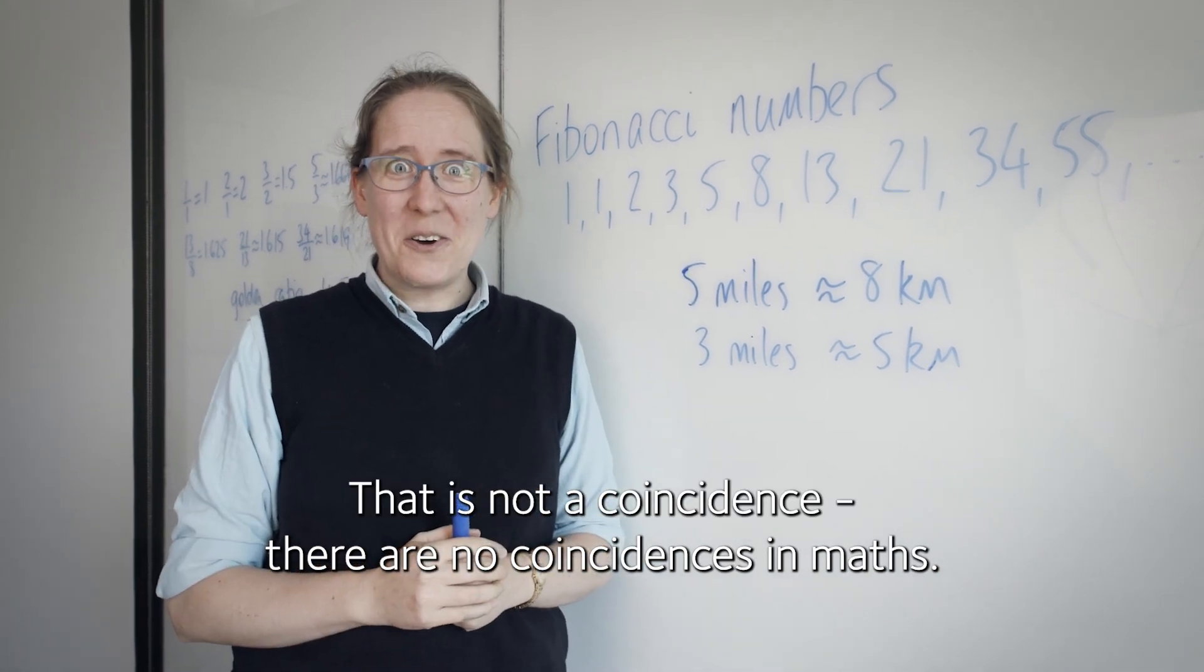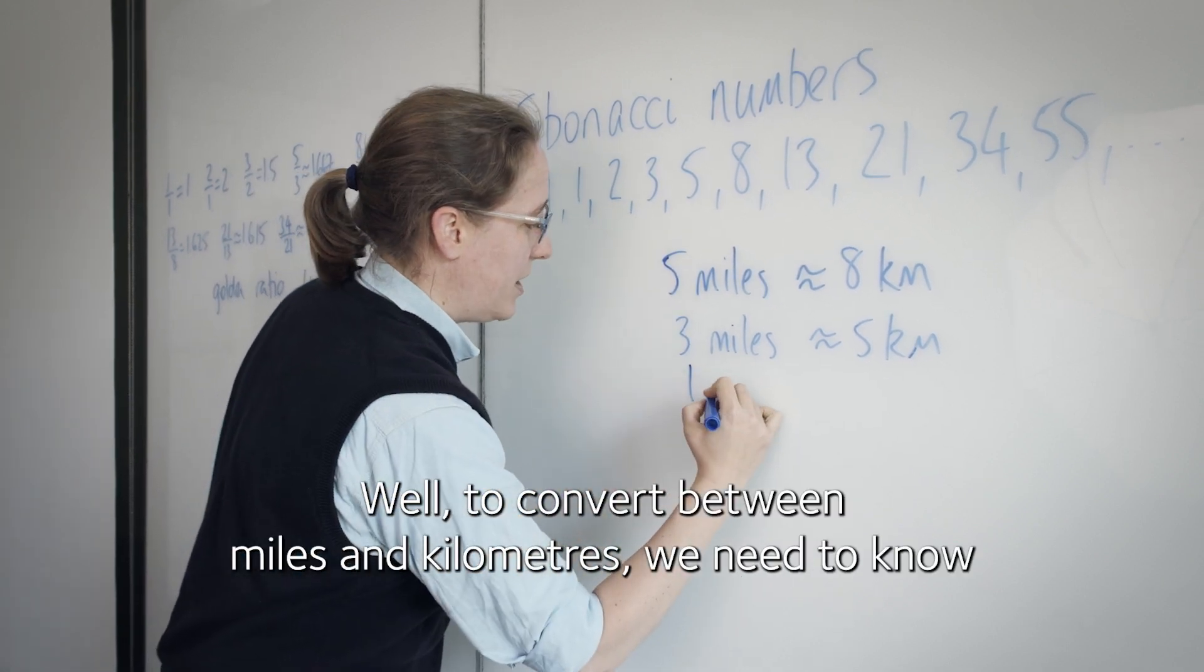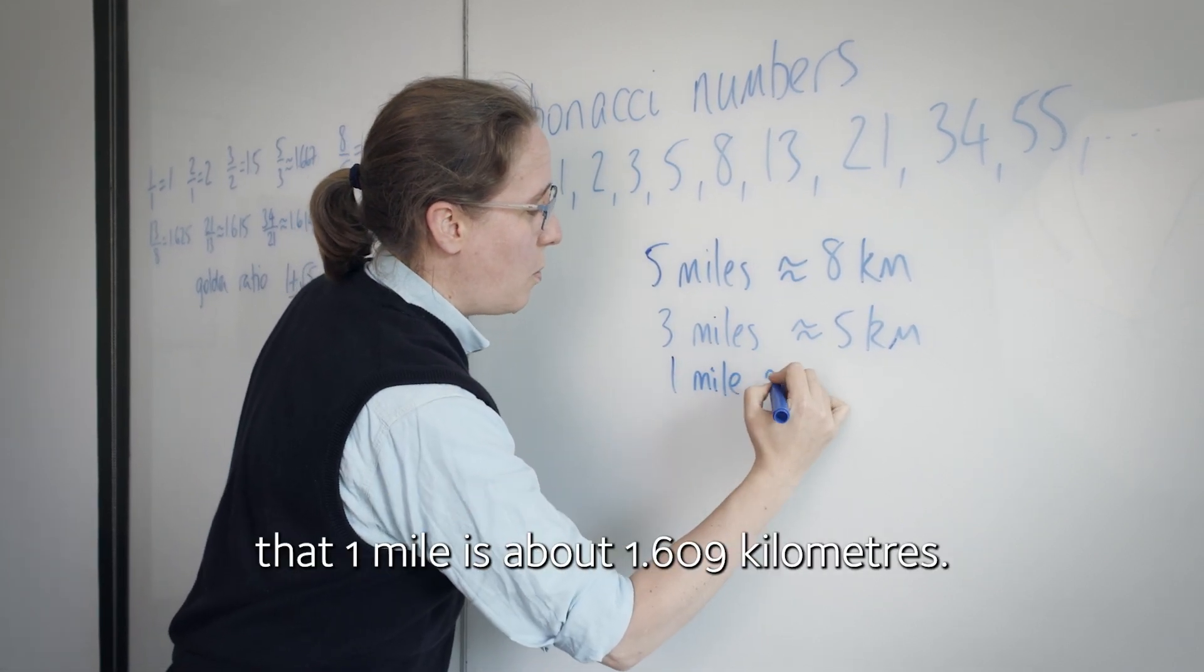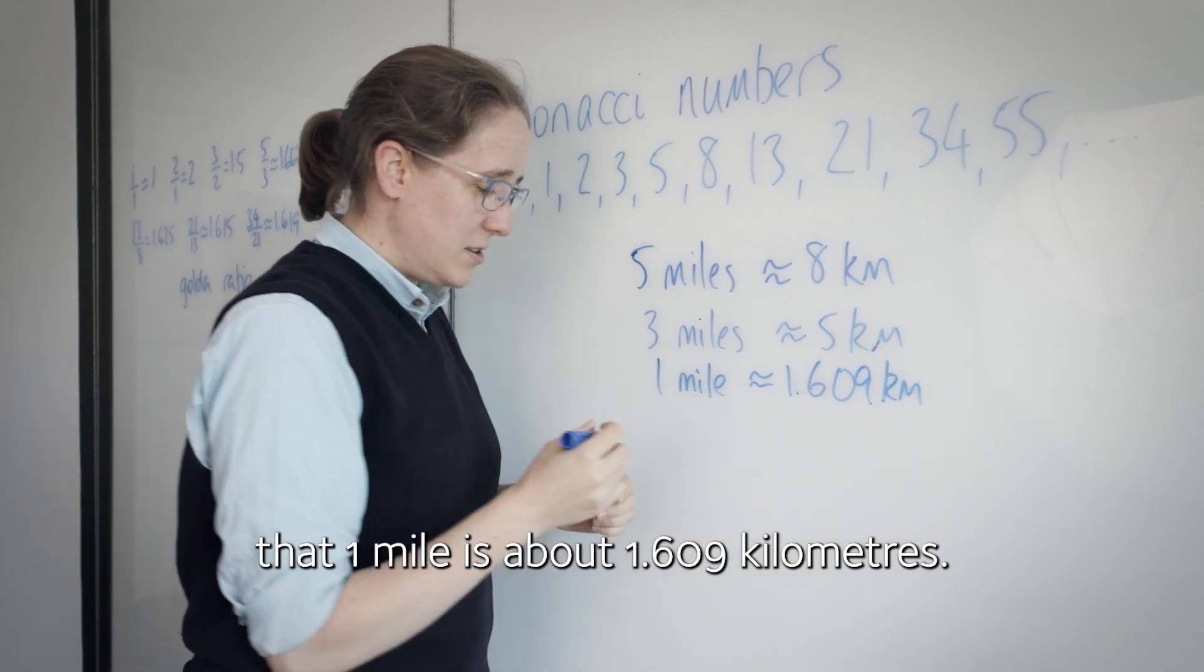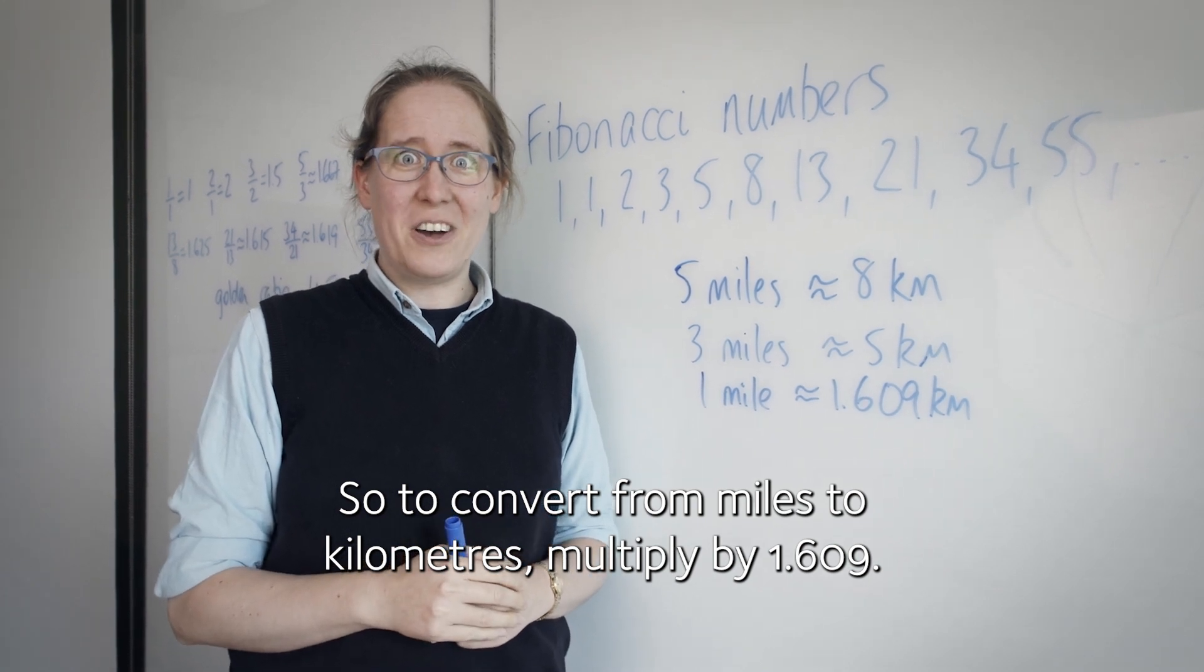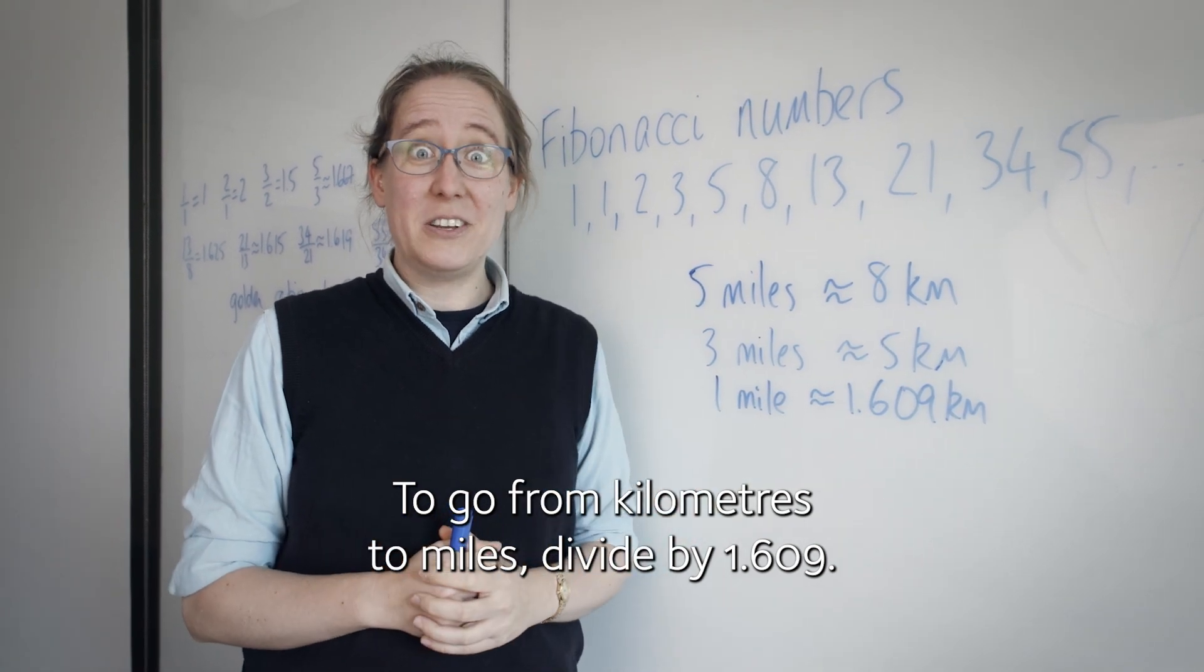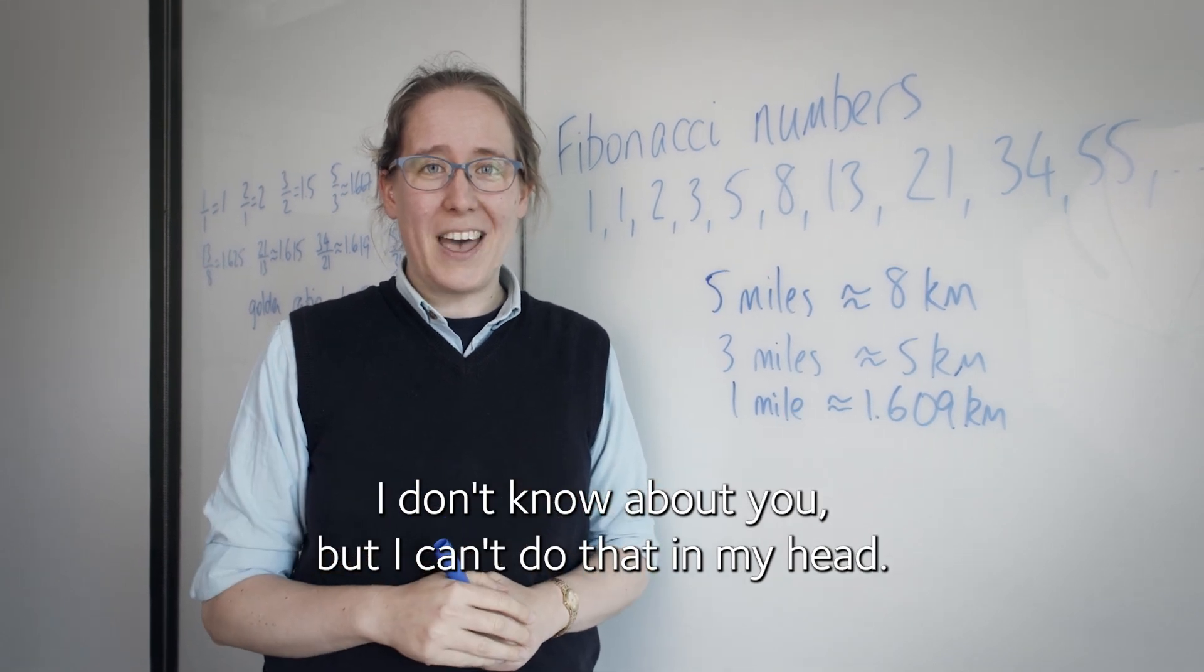That is not a coincidence. There are no coincidences in maths. So what's going on? Well, to convert between miles and kilometers, we need to know that one mile is about 1.609 kilometers. So to convert from miles to kilometers, multiply by 1.609. To go from kilometers to miles, divide by 1.609. I don't know about you, but I can't do that in my head.